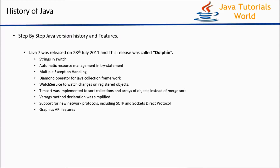The next release of Java is Java 7.0, released on 28th July 2011. This release is also called Dolphin. From this release onwards, strings can be used in switch statements. Automatic resource management was implemented in try-catch statements. Multiple exceptions can be written in a single catch block. The diamond operator for Java collections was introduced. Watch service to watch changes on registered objects was added. Timsort was implemented, varargs method was simplified, new protocols like SCTP were supported, and graphics APIs were introduced.